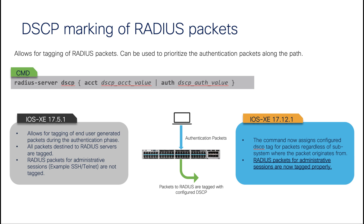Another security feature is DSCP marking of RADIUS packets. Prior to this release, if the switch performed 802.1X authentication, the communication toward the RADIUS server was marked with the configured DSCP value. However, if the switch was accessed via SSH, the communication toward the RADIUS server had DSCP default 0 instead of the configured value. With this release, RADIUS marking capability is now expanded to all types of RADIUS packets, regardless of which subsystem they originate from.